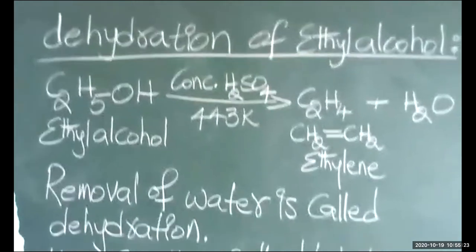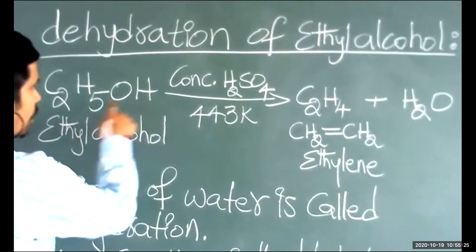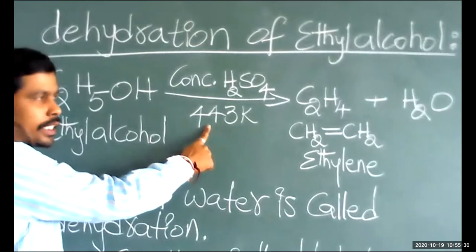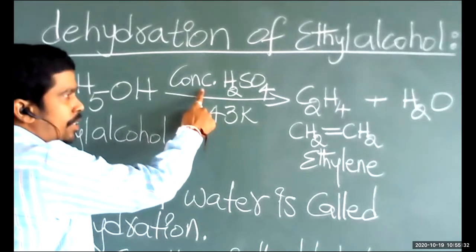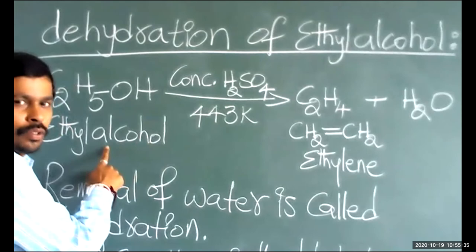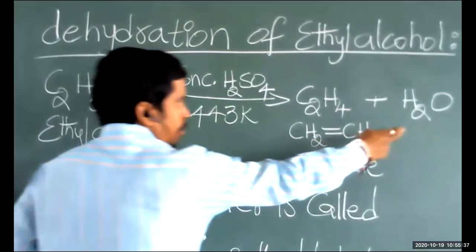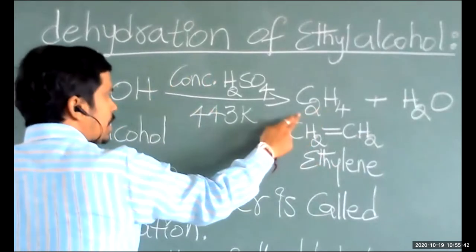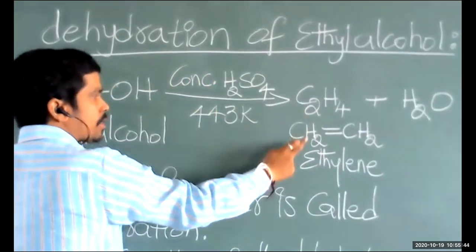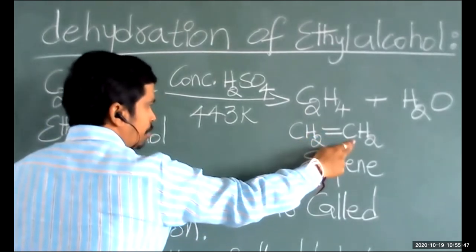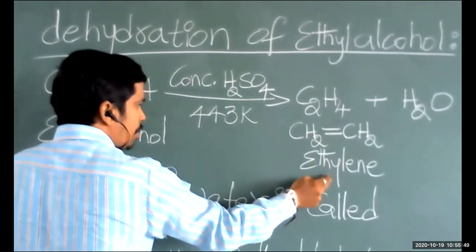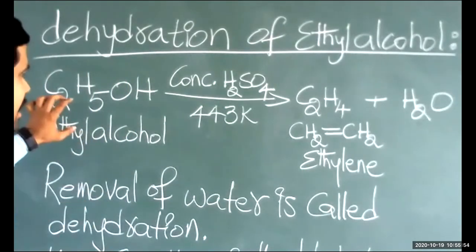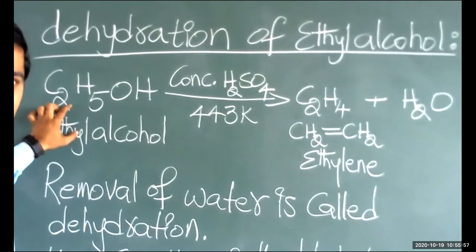In this reaction, ethyl alcohol when heated at a higher temperature — 443 Kelvin — in the presence of concentrated H₂SO₄, diethyl alcohol is going to lose a water molecule. It gives C₂H₄, represented as CH₂=CH₂, which is known as ethylene. The IUPAC name is ethylene. This is a simple reaction of dehydration of ethyl alcohol.